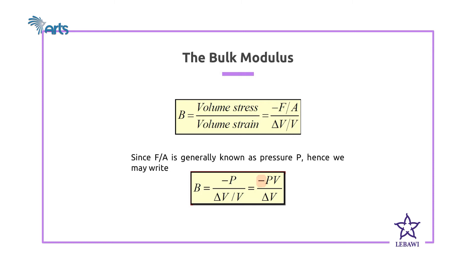When we compress a liquid, the change in volume will be negative — initially we have greater volume, but finally the volume decreases by some amount. Bulk modulus should also be measured in Pascal, and different liquids have different bulk modulus values.